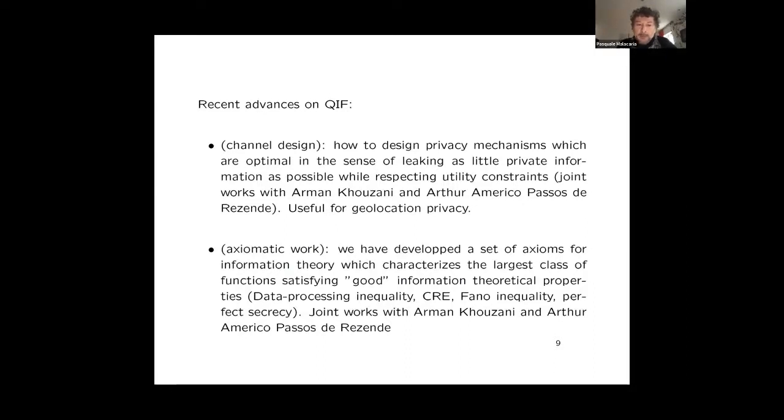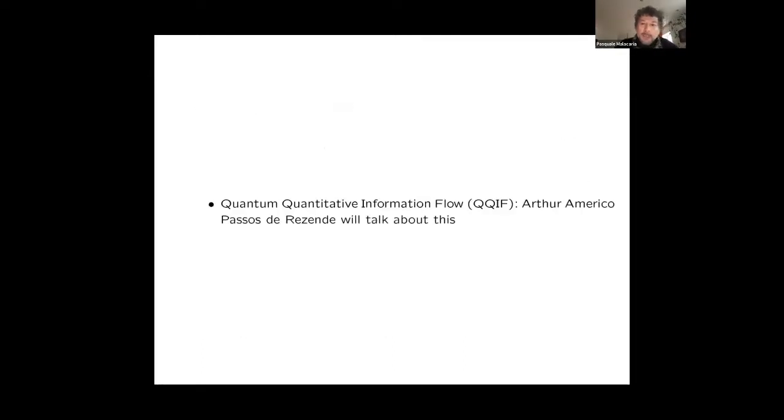Some more recent work, again a joint work with Arman Khouzani and Arthur Amerigo, is very exciting axiomatic work. It's a very theoretical work where we developed a set of axioms for information theory. We've gone beyond security, but this work concerns the whole information theory community. In this work, these axioms characterize the largest class of functions, mathematical functions, satisfying good information theoretical properties—the fundamental properties that one would attribute to entropy. These are data processing inequality, conditional reduced entropy, Fano inequality, and Shannon's perfect secrecy theorem. We have found the largest class of functions where these properties hold. We have presented this class of functions in an axiomatic form.